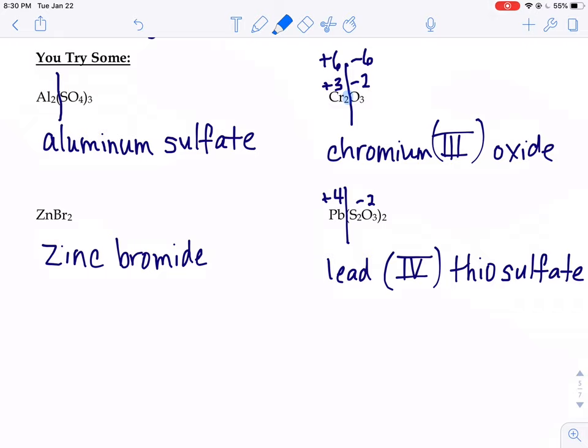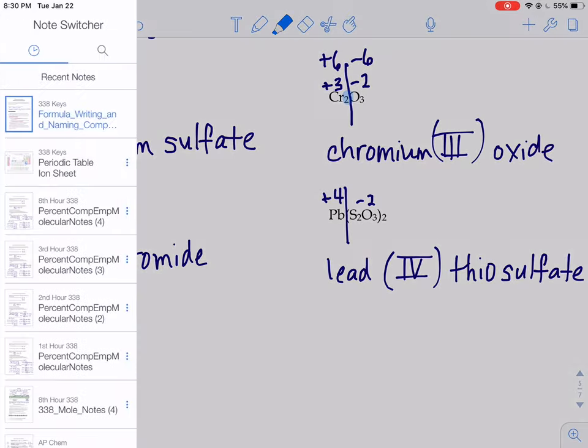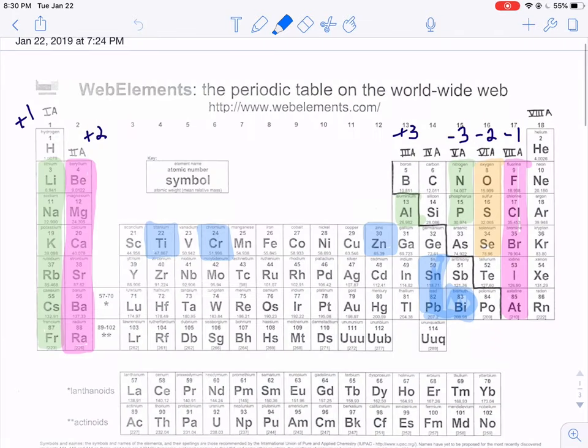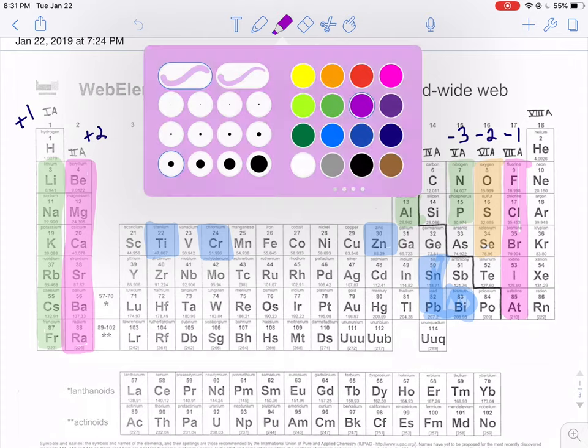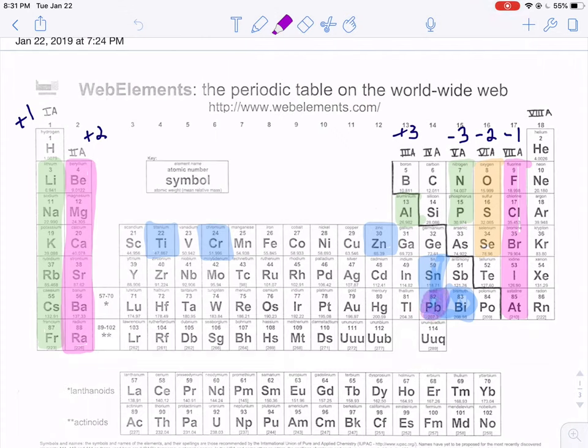The last example, Pb(S2O3)2. Pb is lead. When you look at where lead is, it's right here, we already have it highlighted. I'll do an extra color here. Here's our lead.